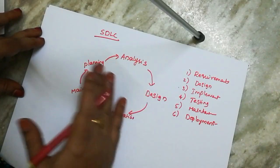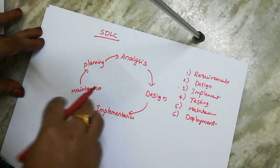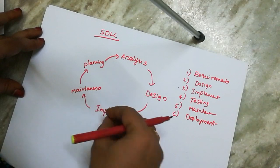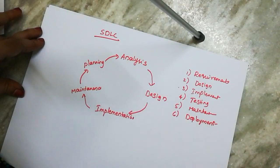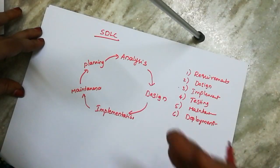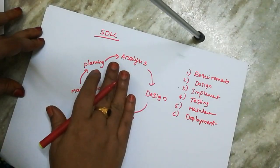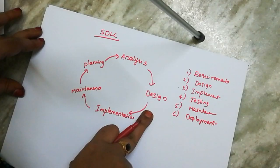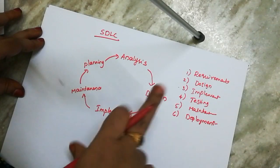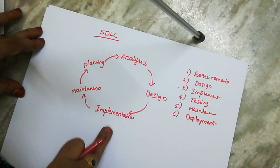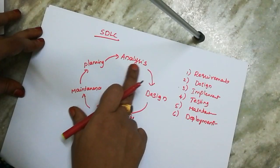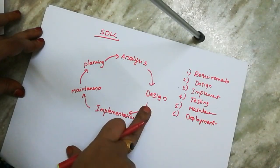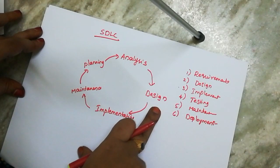In SDLC, like a life cycle — the child stage completes, then the youth stage, then the next or final stage. Similarly, one stage must complete before moving to the next stage. Once the analysis stage is complete, we move to the design stage.